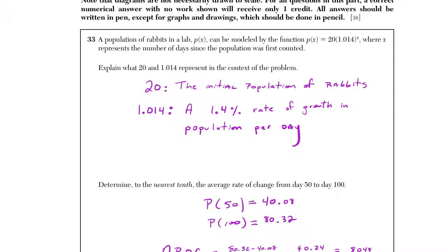But this was an area that some people lost a silly point or two last year just because of their phrasing. So what does 20 mean in this example? In any exponential function, this value out here, we usually use the keyword initial or starting amount. So the initial population of rabbits would be a good phrasing to use there.